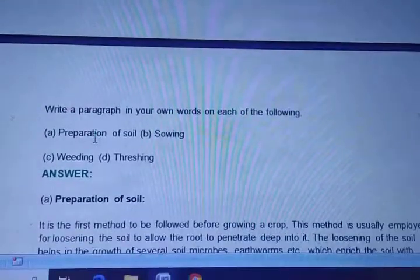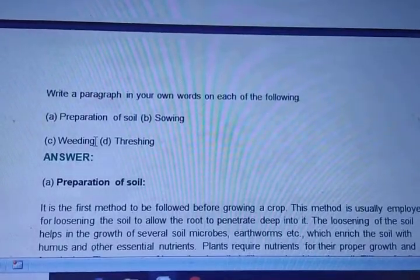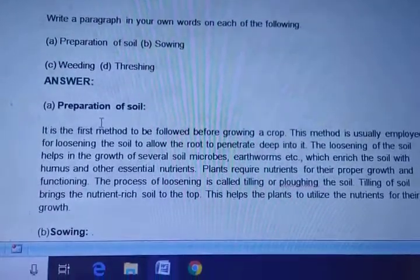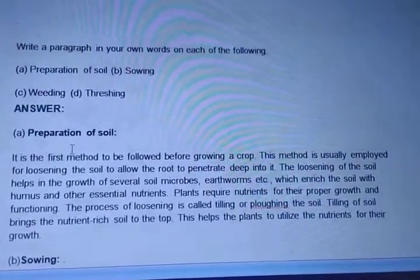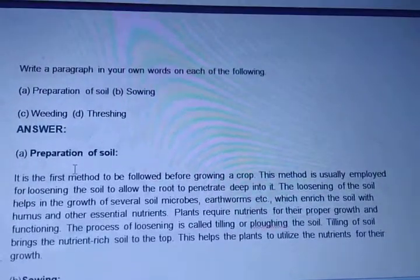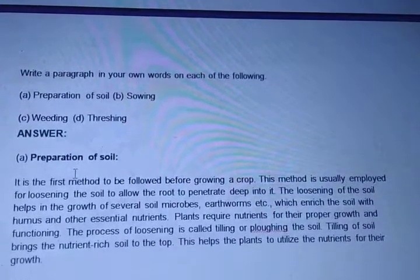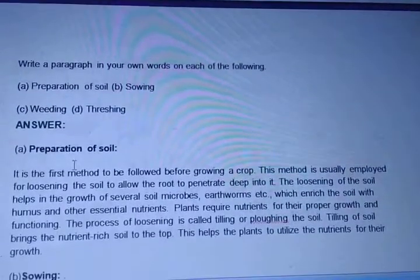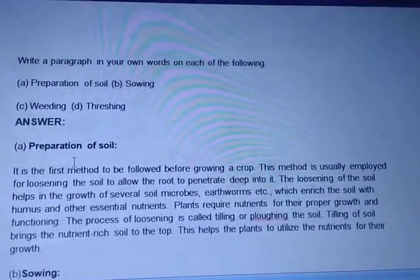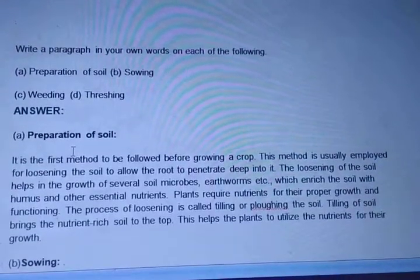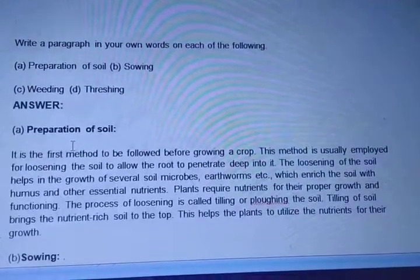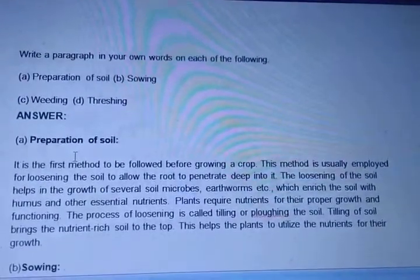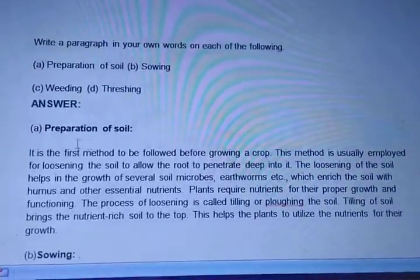Question number four: Write a paragraph in your own words on each of the following - preparation of soil, sowing, weeding and threshing. For preparation of soil: it is the first method to follow before growing a crop, usually employed for loosening the soil to allow roots to penetrate deep into it. The loosening of the soil helps in the growth of several soil microbes, earthworms, etc., which enrich the soil with humus and other essential nutrients. The process of loosening is called tilling or ploughing the soil, which brings the nutrient-rich soil to the top, helping plants utilize nutrients for their growth.